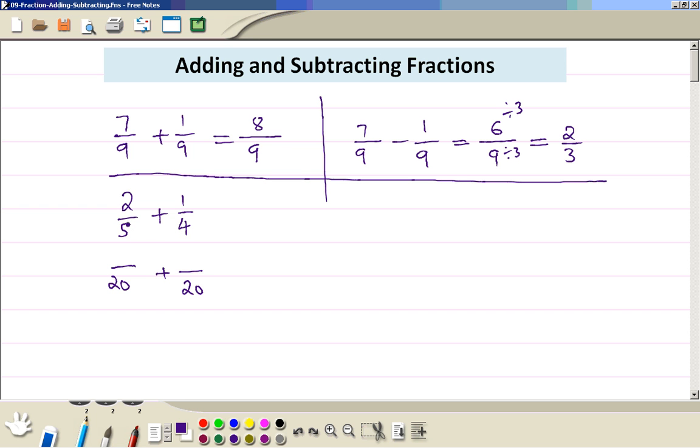So you times this by 4, so do the same thing on the top. Similarly here, we are timing by 5, do the same thing on the top. Now your bottom number is the same, so it's 20, 8 plus 5 on the top.